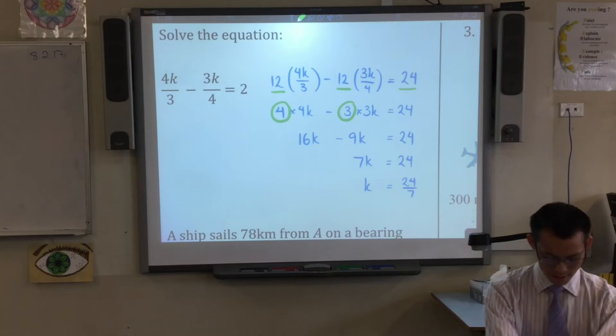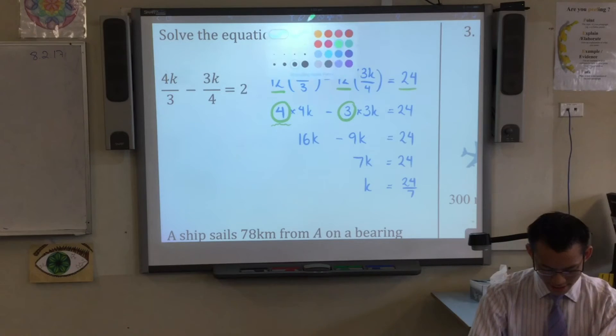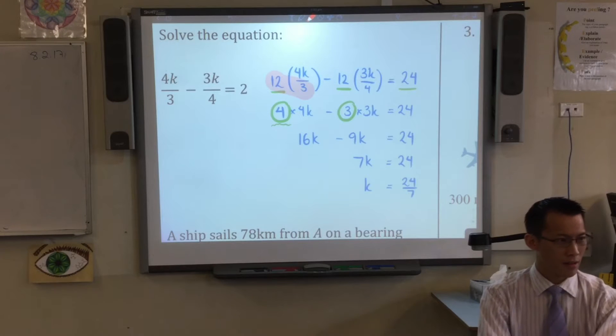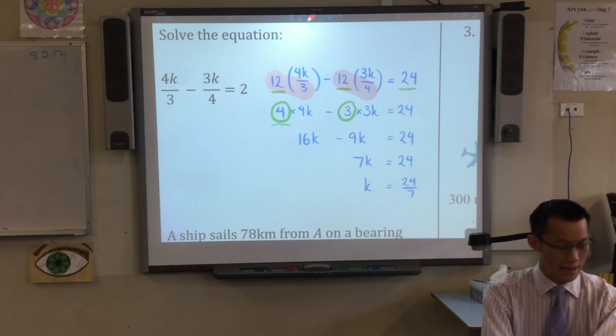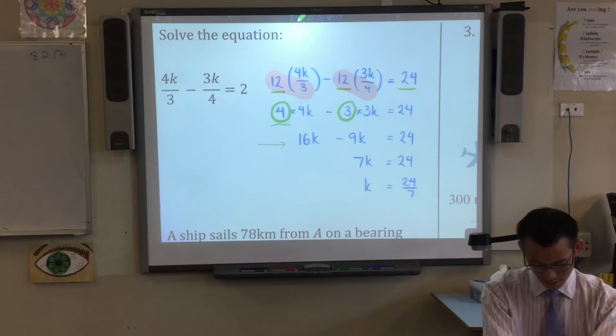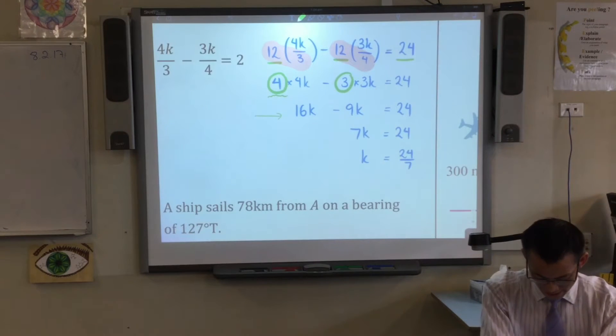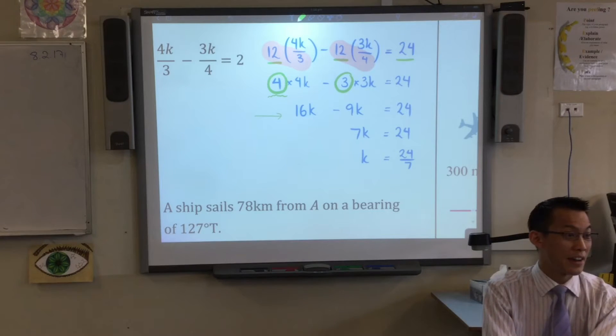This 4 here - do you see the specific place it came from? It was 12 divided by 3. Did you see how I've cancelled there? And the 3 that comes afterwards comes from 12 divided by 4. After that, this next line - all I've done is multiply through: 4 times k is 4k, 3 times 3k is 9k. 16 take away 9, last I checked, is 7. Then the last thing I have to do is divide through by 7.